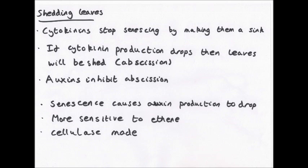Abscission is when plants shed leaves. Cytokinins stop the leaves of deciduous trees senescing — that's aging, turning brown, yellow, and dying. This happens because cytokinins make the leaf act as a sink, so the phloem continuously delivers sucrose to it and it has a good supply of nutrients. However, if cytokinin production drops, the leaves will enter senescence — they go yellow, start dying, and are shed. That's abscission.